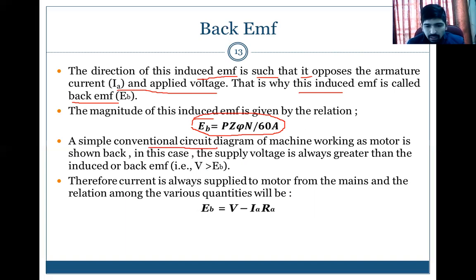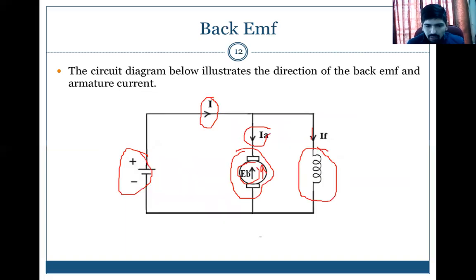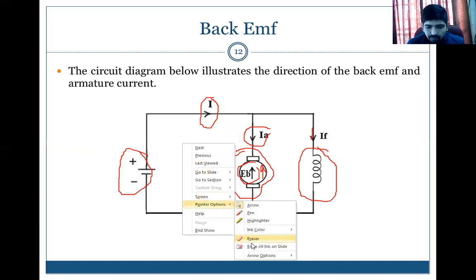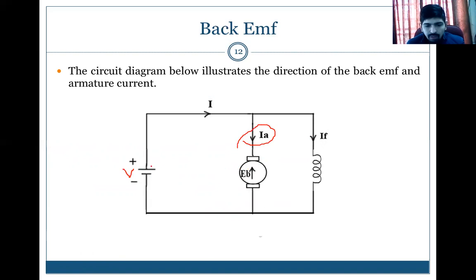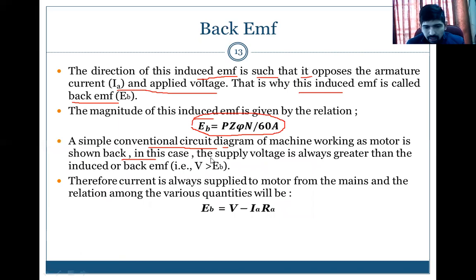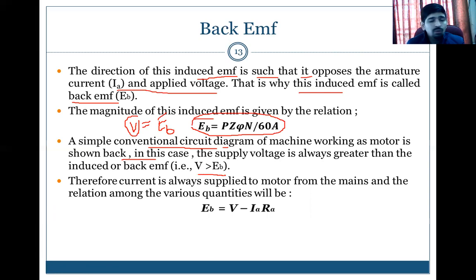The simple conventional circuit diagram of a machine working as a motor shows: EB is the back EMF of the motor, and its direction is opposite to the applied voltage V. The supply voltage is always greater than the induced or back EMF — V cannot equal EB. The formula for back EMF is: EB = V − IA × RA, where RA is the armature resistance. Back EMF is always less than the applied voltage.